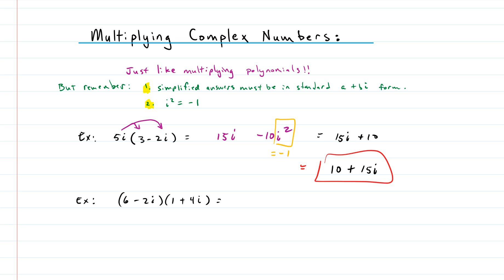Our second example looks just like a FOIL problem with polynomials — and in fact it is. Taking (6 minus 2i) times (1 plus 4i): 6 times 1 is 6, and 6 times 4i gives us 24i. Then the second term: negative 2i times 1 gives negative 2i, and negative 2i times 4i gives negative 8i squared.